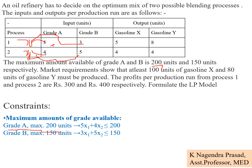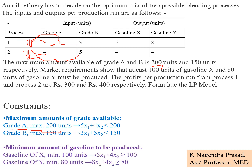Next, look for constraints in terms of gasoline X and Y. The market requirement states that at least 100 units of gasoline X must be produced — 'at least' means greater than or equal to 100. Gasoline X output is 5 units from process 1 and 4 units from process 2. So the constraint is: 5x1 + 4x2 ≥ 100.